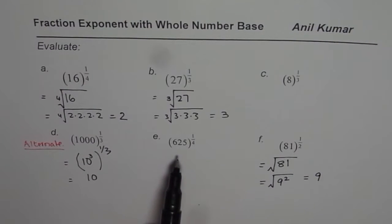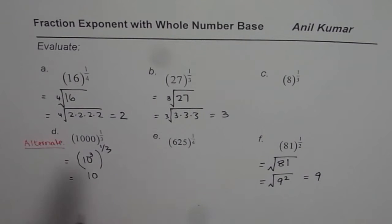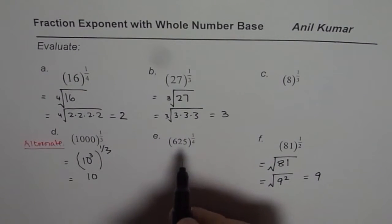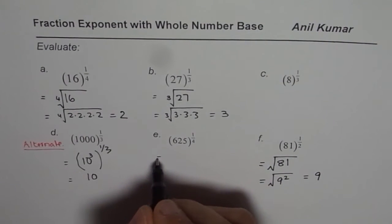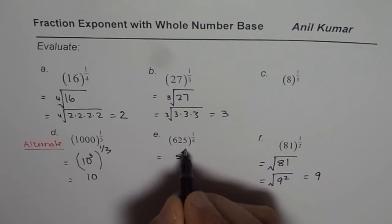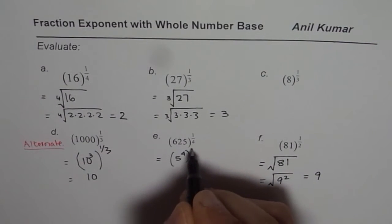So, let me solve this with alternate method. But for you, you need to solve it as we did here. 625 to the power of 1 over 4. We know 25 squared is 625, but 5 to the power of 4 is 625.